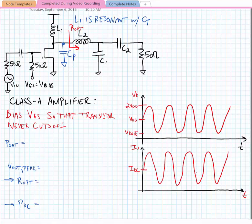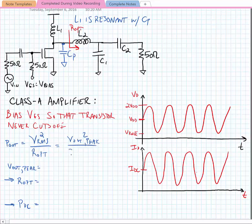Because we have a sinusoidal voltage at the drain of the transistor, we can calculate the output power as Pout equals Vrms squared over R-Opt. This is equal to Vout-peak squared over 2 times R-Opt.